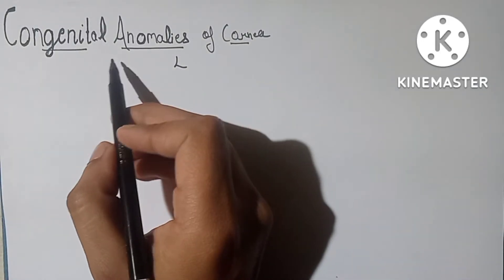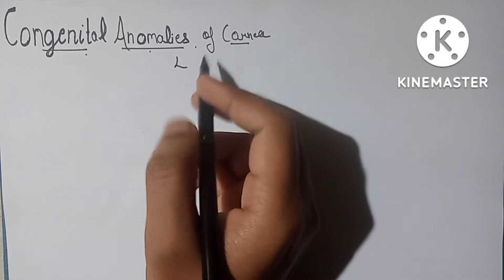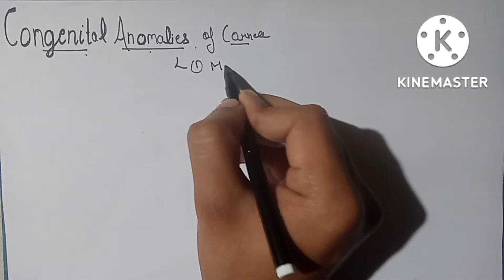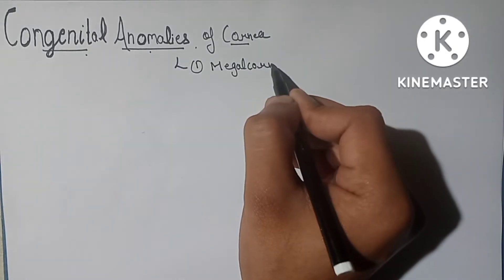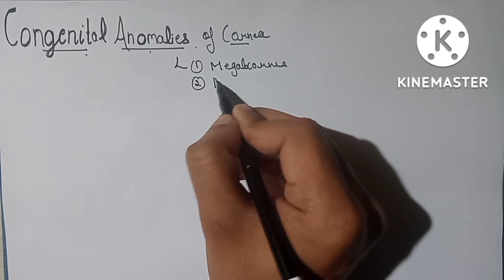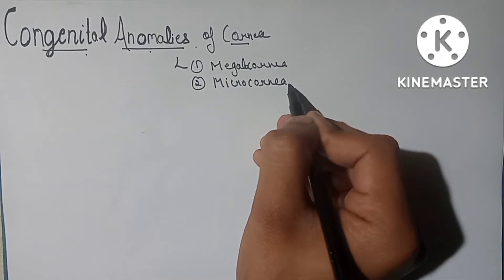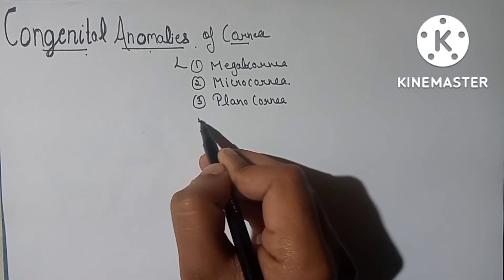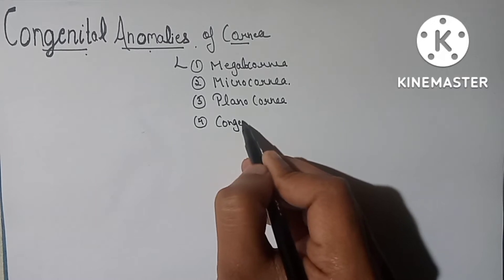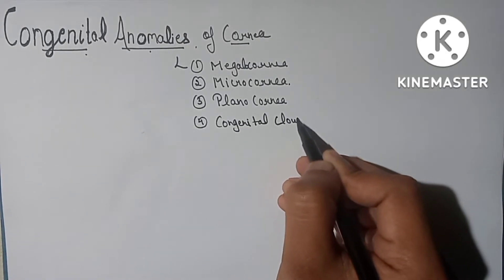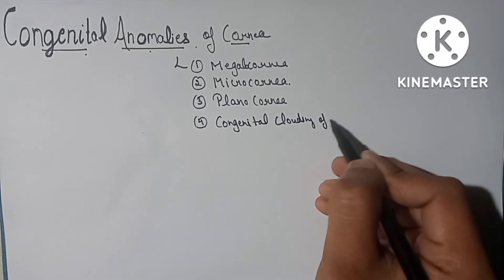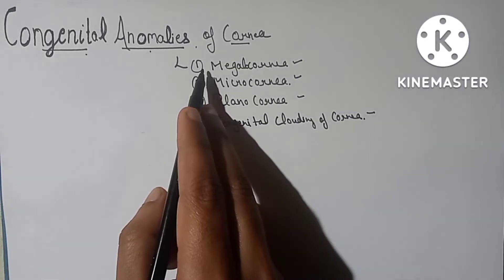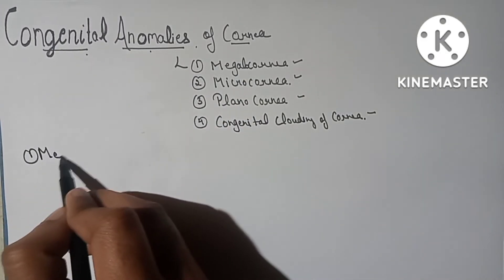Good morning friends. Today we will learn about the congenital anomalies of the cornea. In the cornea there are congenital diseases like megalocornea, microcornea, cornea plana, and congenital clouding of cornea. We will discuss each one in detail. The first one is megalocornea.